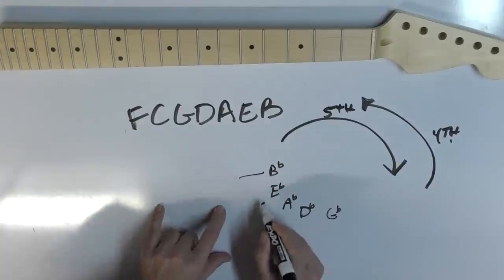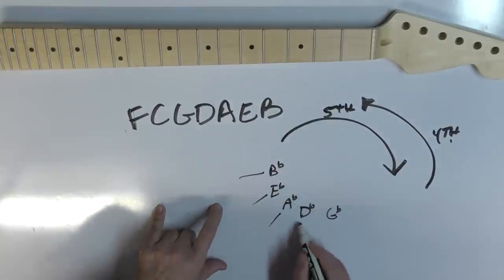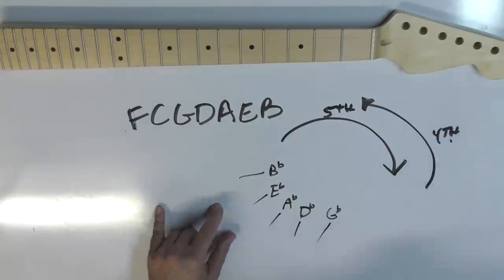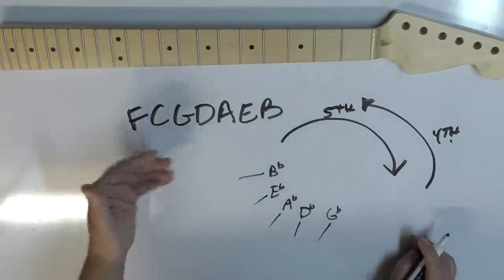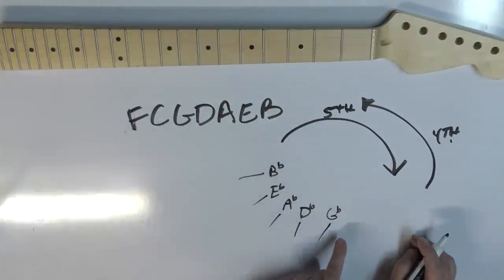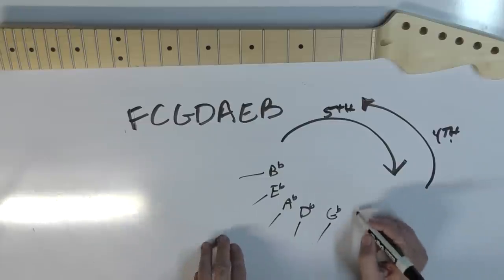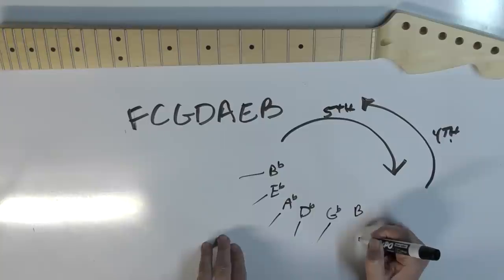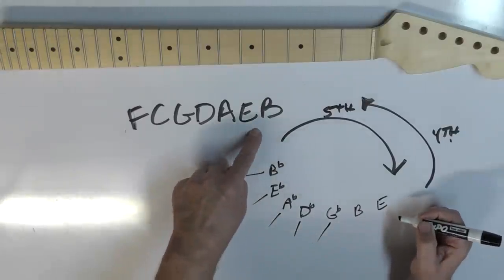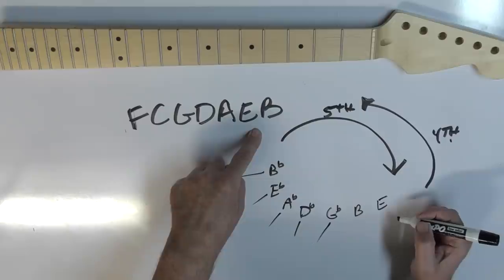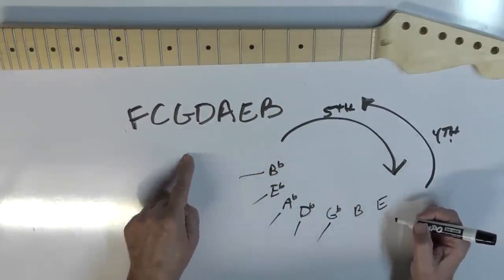In fact, this is the exact same thing that is on your fretboard. Right here is your seventh string. Here is your low E, your A, your D, your G. Because it just keeps going and going and going. What is after a G? A B. What is after that B? An E. Right? It's here. All you have to do is memorize the order of your strings. And you already have the circle of fifths.